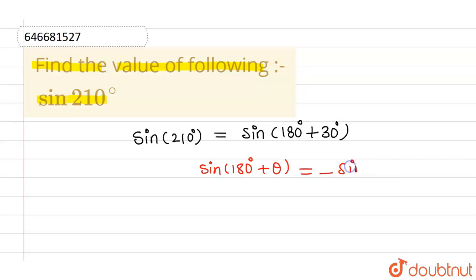So by using this particular formula, I can say that sine 210 degrees, which is sine 180 plus 30, can be written as minus sine 30. And we know that the value of sine 30 degrees is nothing but 1 by 2.